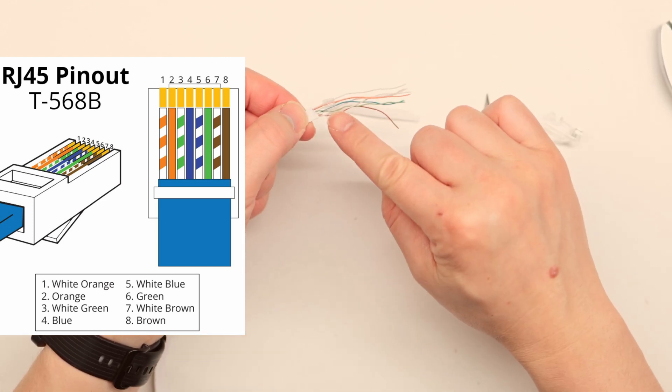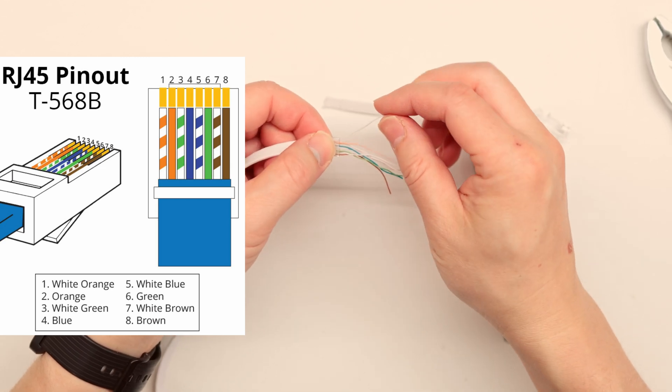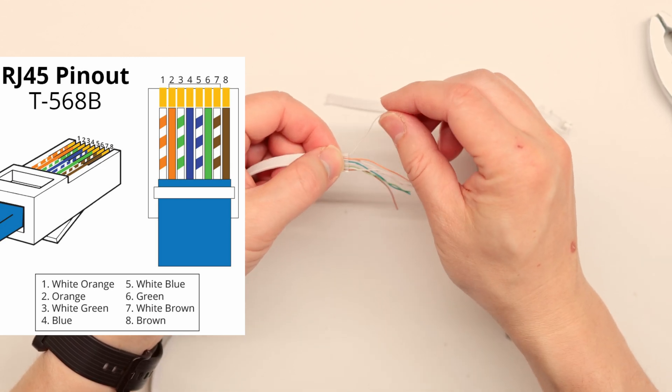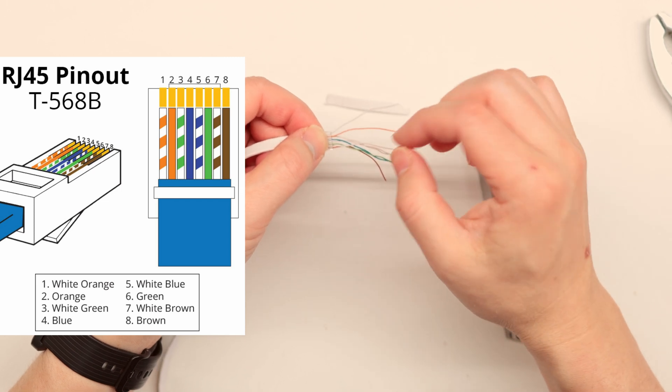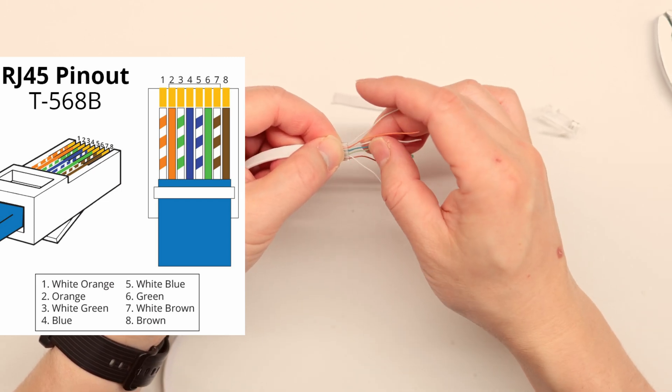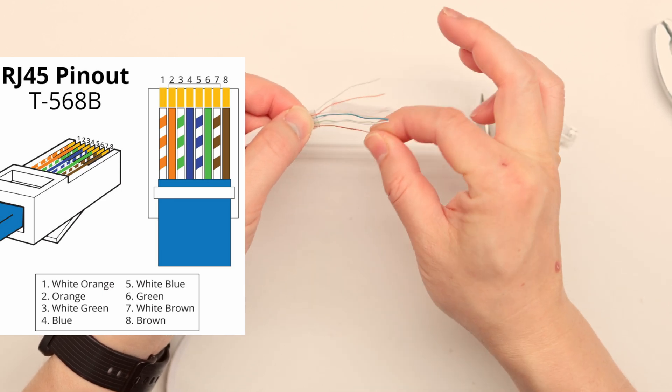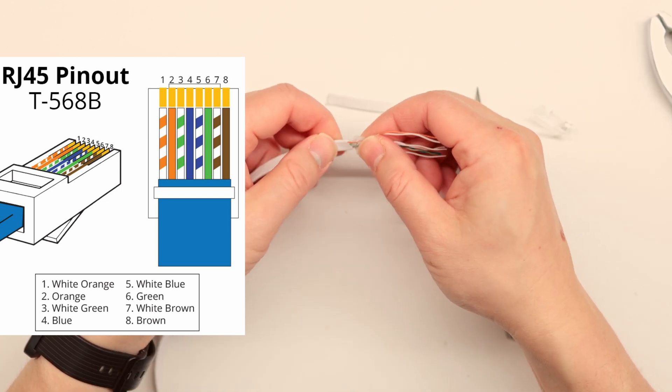I love using this loading bar right here because at the last moments you can always double check the order. So here we go. This is white-orange, orange, white-green, blue, white-blue, green, white-brown, and then back to solid brown. Perfect. The order is correct.